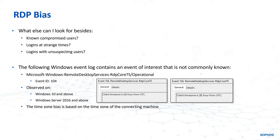So let's say as an example your users are typically based out of the UK and their time zone bias from UTC at present would be zero hours from UTC. Typically when you see them RDP into devices, you would have a client time zone bias of zero.